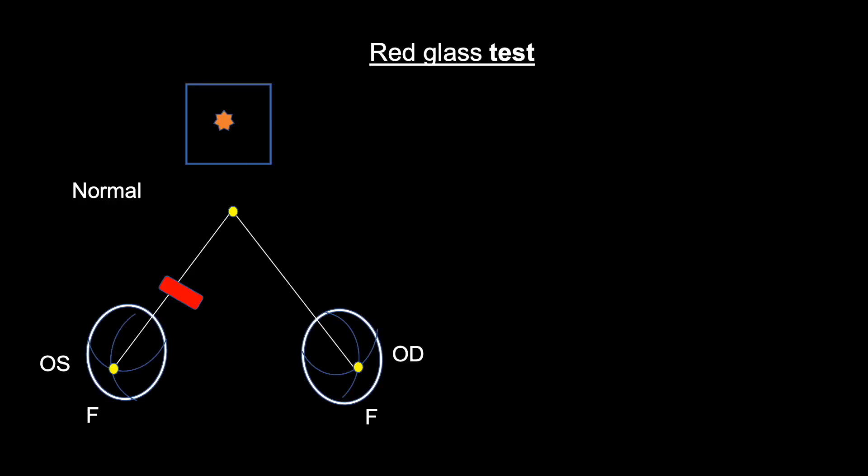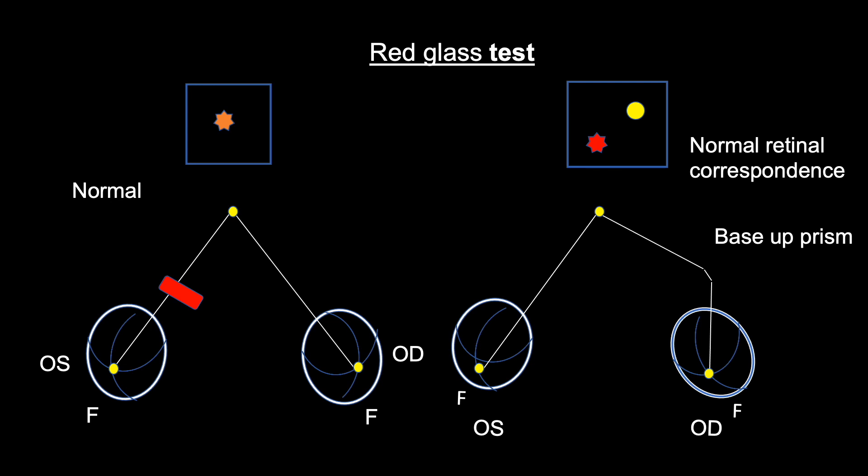Normally we can see a pinkish light when we place red glass in front of the left eye only. When the base of prism is placed in front of the right eye, the image will shift and we will experience diplopia. Here, red light is seen below and slightly away from the white light because of normal retinal correspondence.